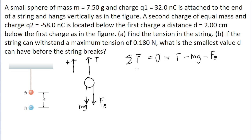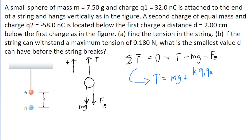Fortunately for us, this is a fairly simple algebraic expression. To solve for T, we just add Mg and F sub E to both sides to get T on its own. So we find that the tension force is equal to Mg plus the electrostatic force. Expanding this further, recall that the electrostatic force between two charged particles is given by Coulomb's law — the Coulomb constant k, multiplied by the product of the magnitudes of the charges, divided by the square of the distance between them, represented by the variable d.